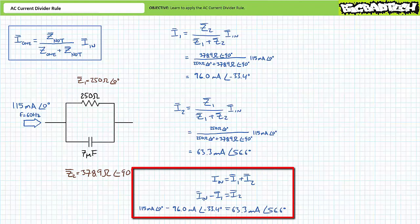A Kirchhoff's current law analysis of this parallel circuit suggests that IN equals I1 plus I2 — the sum of currents entering a node equals the sum of currents leaving a node. What goes in must come out. Given we solved for current through individual elements using the AC current divider rule, we can substitute the result of one of our calculations to verify our second value.